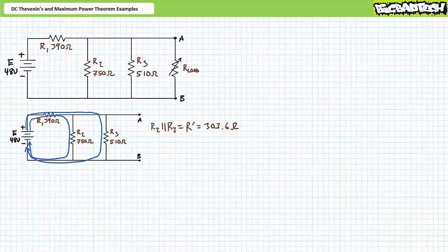Let's first solve for ETH, the Thevenin's equivalent voltage. To solve for ETH, one removes the load resistor and determines the open circuit voltage across the nodes of interest. Note that removing the load resistor has fundamentally altered the nature of the original series-parallel circuit — all current must travel through R1 and then splits into two paths: one afforded by R2, the other by R3. R2 and R3 are in parallel, a simplification called R-prime, which is in series with R1. The open circuit voltage is the voltage across V2 and V3, or V-prime. An application of the voltage divider rule demonstrates that V-prime is 21 volts. This is our Thevenin's equivalent voltage, ETH.